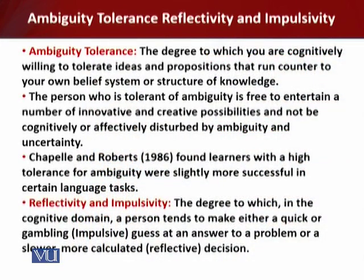Ambiguity tolerance refers to the degree to which you are cognitively willing to tolerate ideas and propositions that run counter to your own belief system or structure of knowledge. Some people are relatively open-minded in accepting ideologies, events, and facts that contradict their own views — they are ambiguity tolerant, more content than others to entertain and even internalize contradictory propositions.